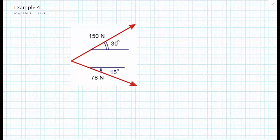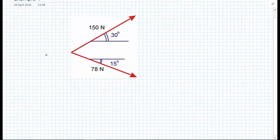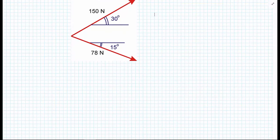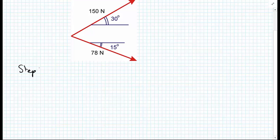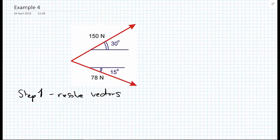We're just going to go through this step by step. Step one is to resolve the vectors into their components. I'm going to call this vector here, the 150, I'm going to call this F1, and I'm going to call the 78 newton vector F2. And this F1 vector, I'm then going to split up into its Cartesian components.